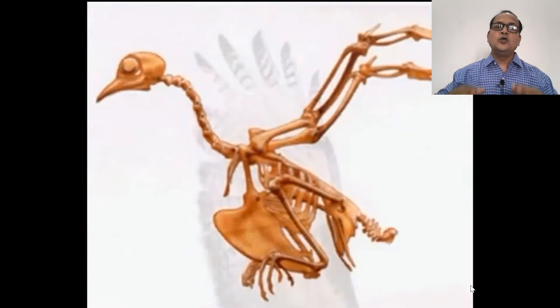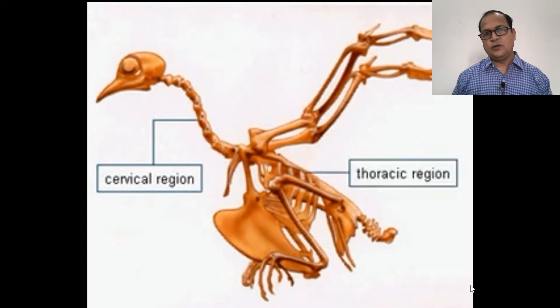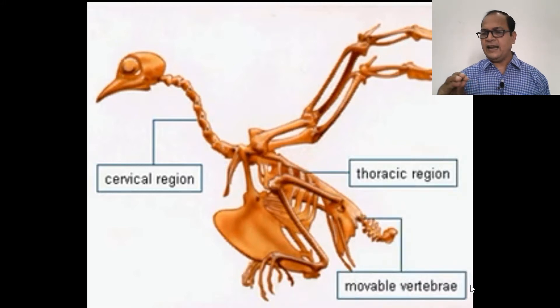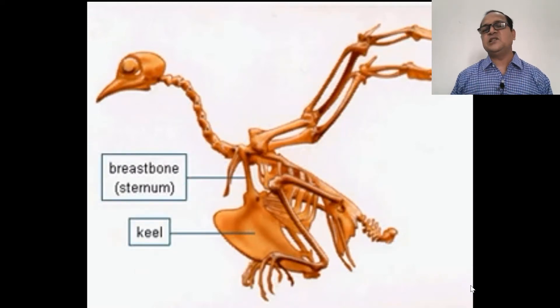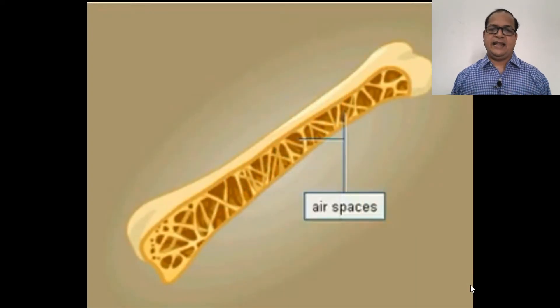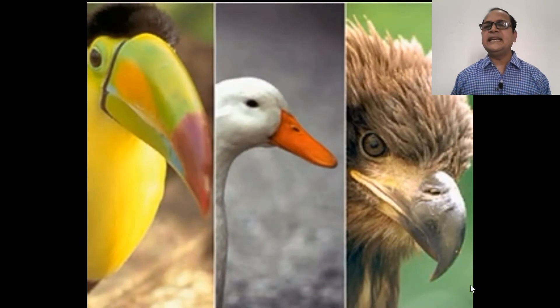Their four limbs are converted into wings, and at the last point of the wings, long feathers are present to extend the area of flight. In the cervical region, 9 to 25 vertebrae are found in the neck, so they can rotate their head 360 degrees. Most of the bones are fused to form a synsacrum or caudal peduncle. Their breastbone or sternum has a long extended part called the keel, which provides space for the attachment of muscles. Their bones are pneumatic, with air spaces where bone marrow is not present, making the body light.